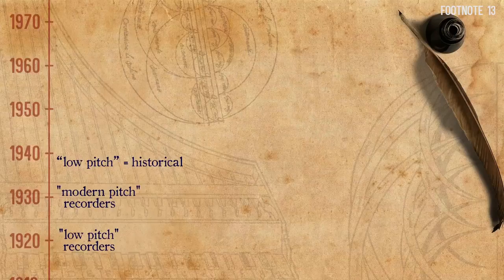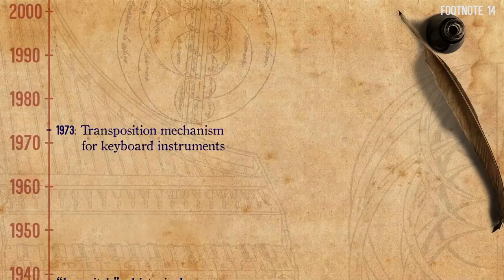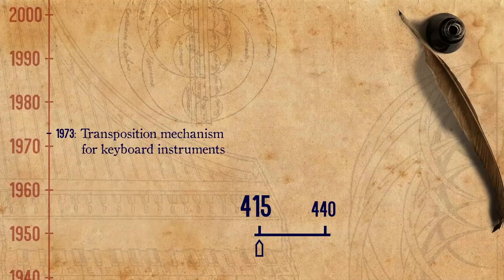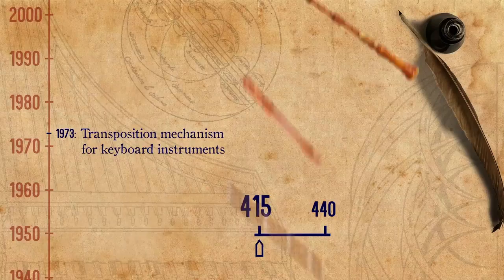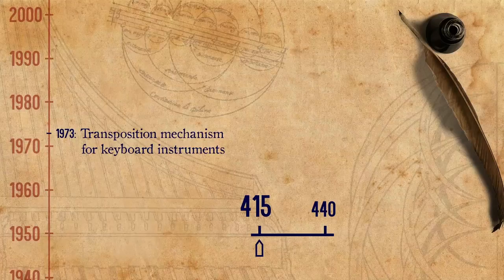It seems that having the historical pitch a semitone below the common pitch was a rather early idea. Its real bloom, however, took place only at a later stage, when the transposition mechanism for keyboards was introduced. According to an account by one of the important harpsichord builders in the blooming period of early music, this happened in 1973. For the first time, harpsichords were able to switch pitches by sliding the keyboard, and thus have the possibility of accompanying instruments either in 440 or in 415. Knowing there were more possibilities for accompaniment, instrumentalists were encouraged to commission instruments in the lower pitch.